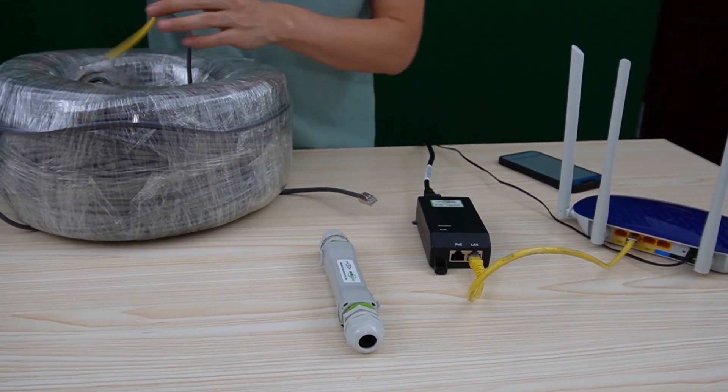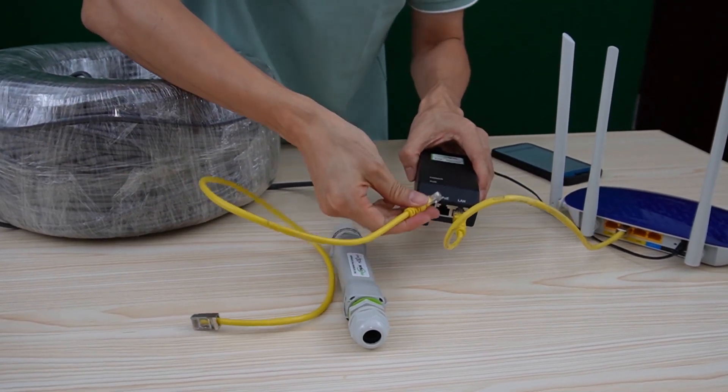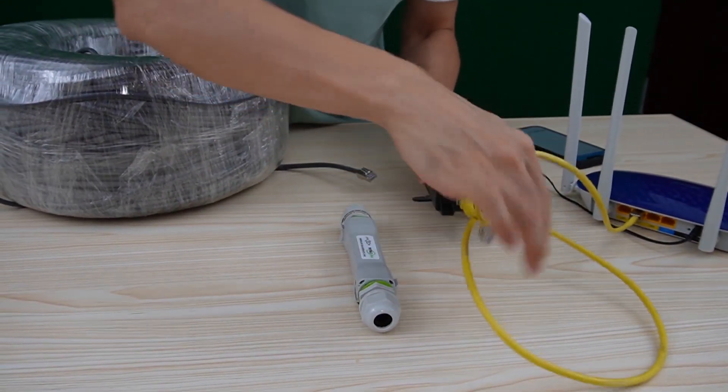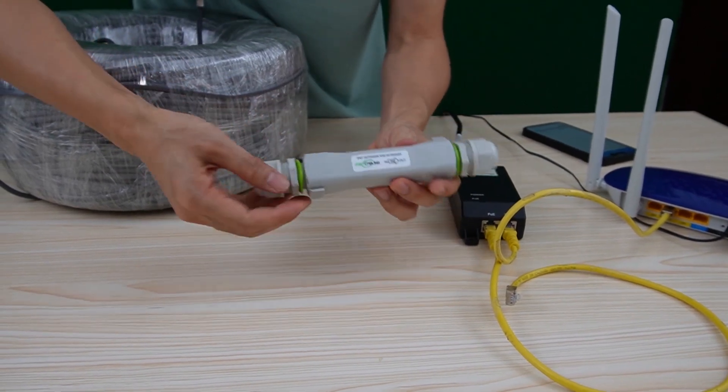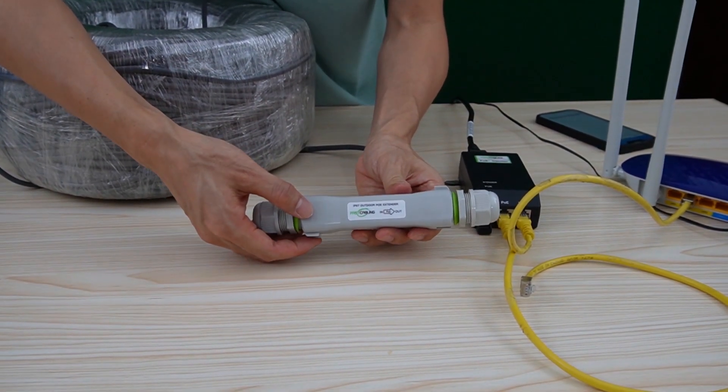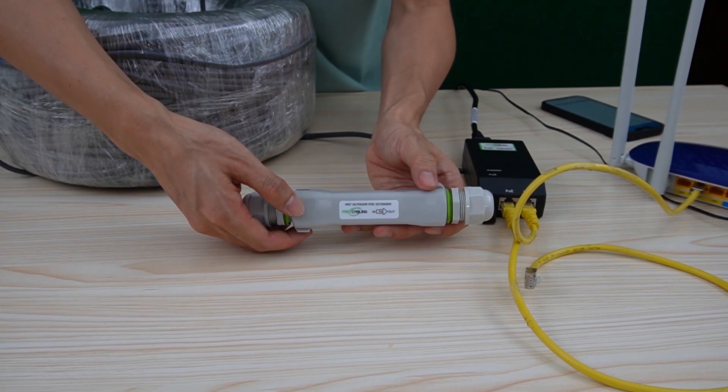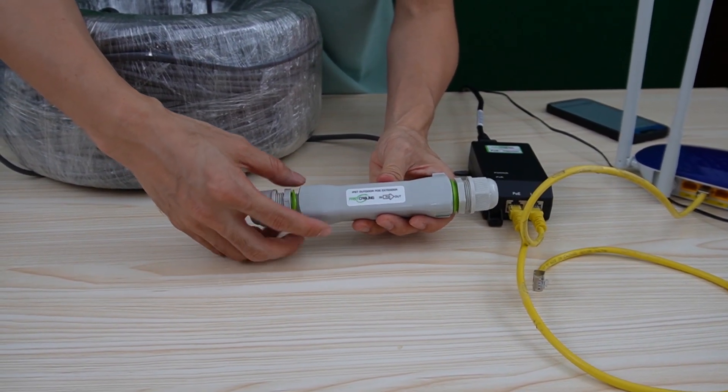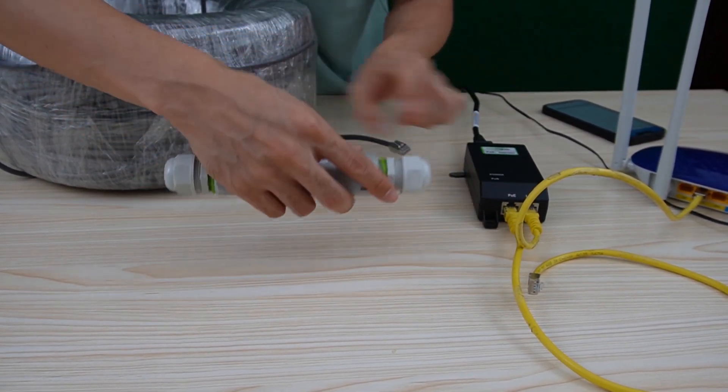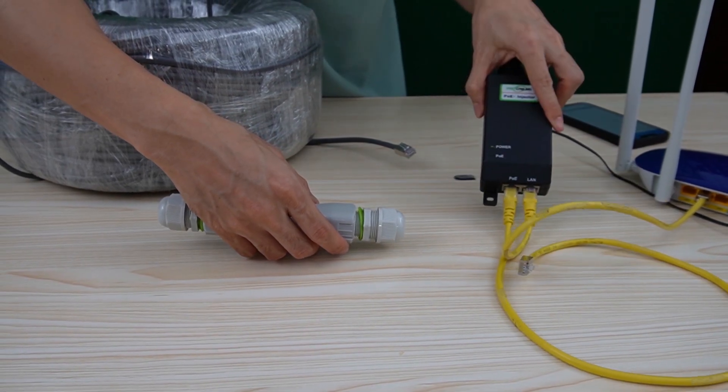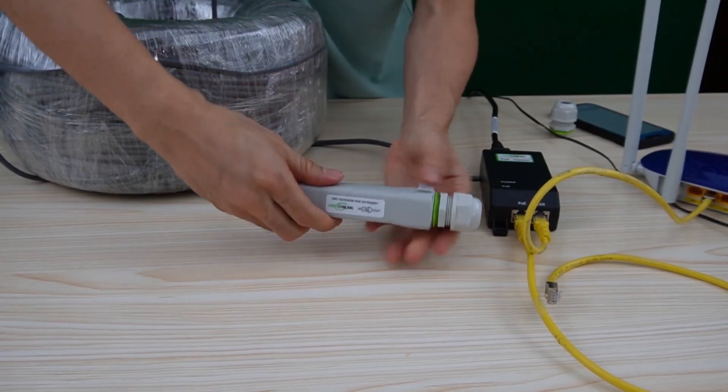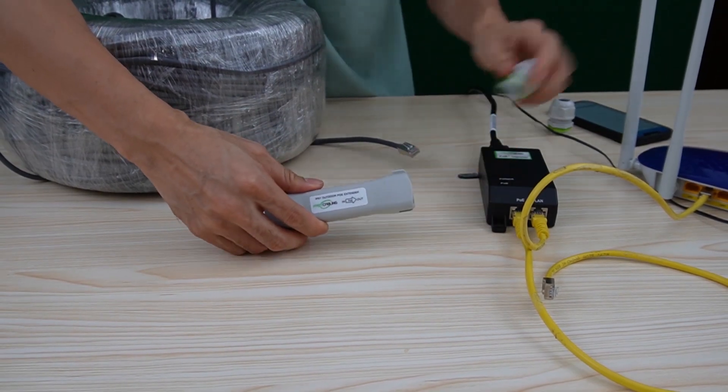Next, we need another short patch cord to link this PoE port to the first PoE extender. You see the PoE extender has input and output. A is input, B is output. We need to flip the first one. That means the input usually is supposed to face the PoE injector, but now we need to flip. That's very important, it's a tricky thing, otherwise it will not work.